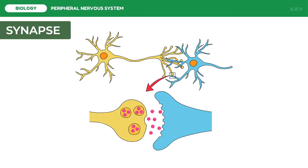There are two types of synapses: electrical synapses and chemical synapses, depending on how information is transferred between the two neurons. In an electrical synapse, two neurons are connected by gap junctions which allows charge-carrying ions to flow directly between the two cells in either direction. The vast majority of synapses in the human nervous system are chemical synapses, at which a chemical messenger transmits information one way across a space separating the two neurons.